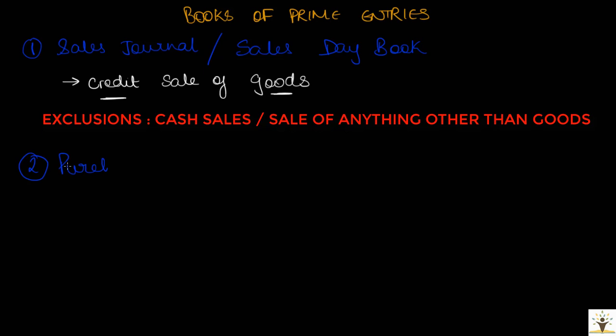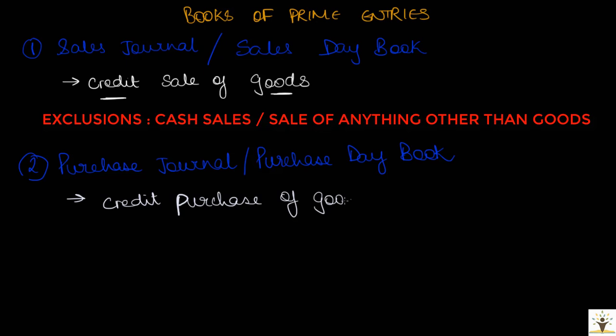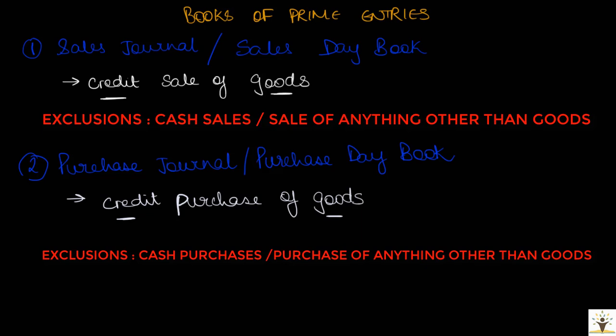The second book is the purchase journal, also known as the purchase day book. This book is used to record transactions involving credit purchases of goods only. When goods are purchased on credit from creditors, that transaction is recorded here. Transactions specifically excluded are cash purchases of goods or purchase of anything other than goods — for example, purchase of non-current assets.